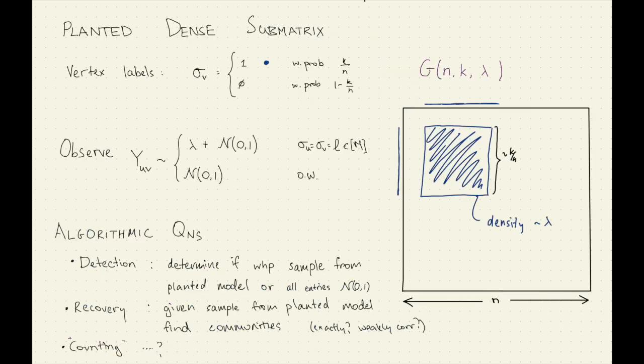Let's get started. The planted dense submatrix — the model we'll be thinking about — is the planted dense submatrix with additive Gaussian noise. We have some vertices which will be in our community, denoted with a blue dot, and each is independently in the community with probability K over n. So we're expecting the community to be approximately size K, and these ones we give a slightly raised mean.